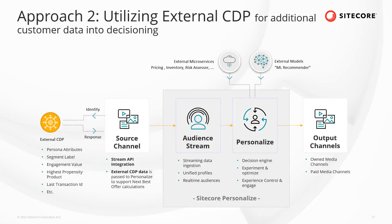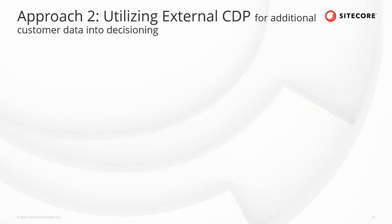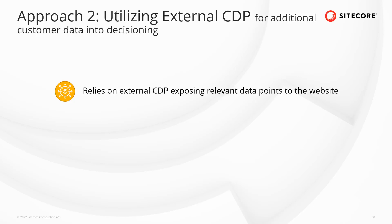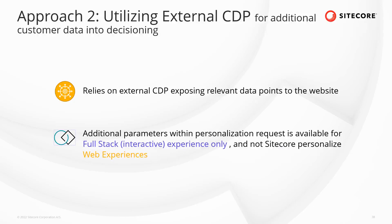Approach 2 is the headless decision approach. The external CDP — or customer store — exposes relevant data points to the website to make customer data available. When a personalization request is made to the Personalize API, additional key-value pairs from the data layer are passed as additional parameters, such as persona or segment labels, or customer value and customer details. The decision canvas can then utilize these data points as part of its next best offer calculation. This approach relies on the external CDP or customer store being able to expose relevant data points to the website. The ability to add additional parameters within a personalization request is available for full-stack interactive experience only, and not Sitecore Personalize web experience. In the case of web experience, a custom event could be sent to the homepage to tie this additional data to a profile.